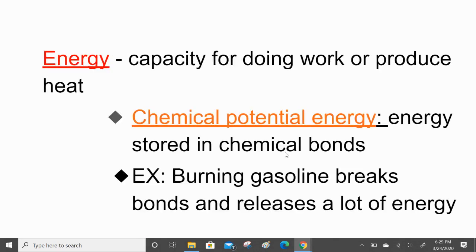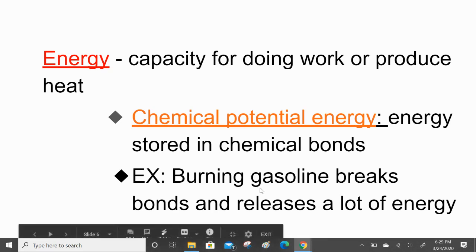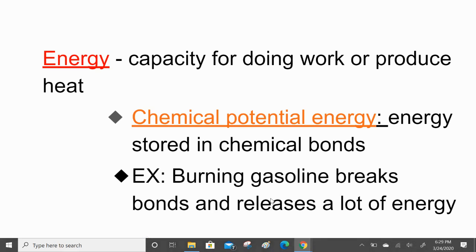Energy—what is it? It's the capacity to do work or produce heat. Chemical potential energy is energy within the chemical bonds, and that's what we're looking at and measuring. For example, burning gasoline in a combustion reaction releases the energy within the bonds of the gasoline molecule.